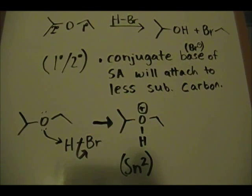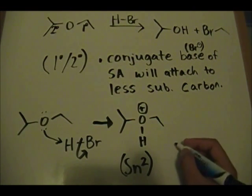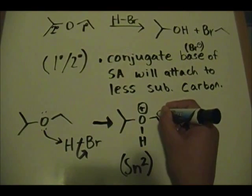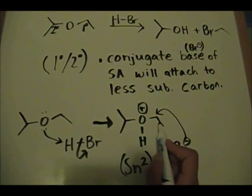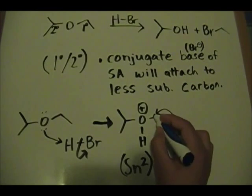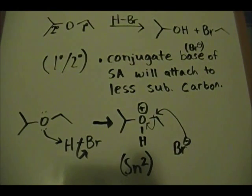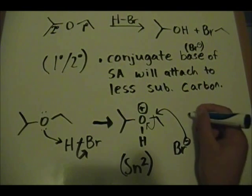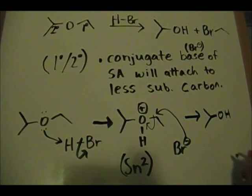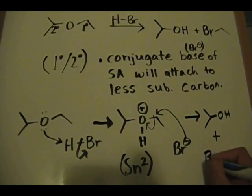In this next step, it follows an SN2 style of reaction mechanism. The conjugate base of the strong acid — bromine — comes into the picture and binds to the less substituted carbon, while kicking off this pair of electrons onto the oxygen. As a result of this, you form your secondary alcohol plus your primary alkyl halide with the bromine attached.